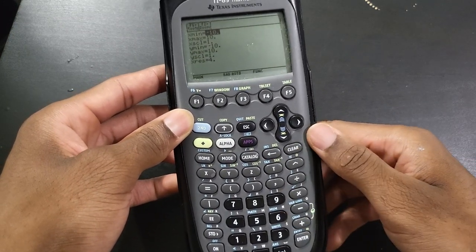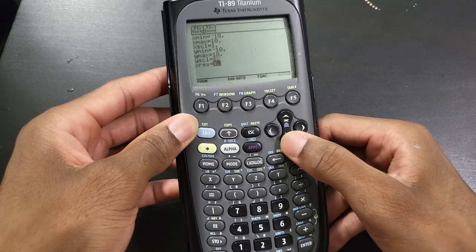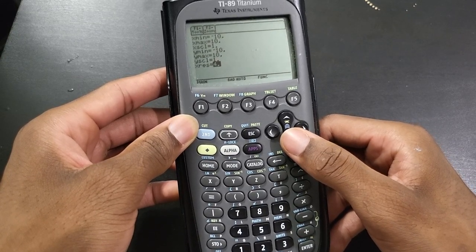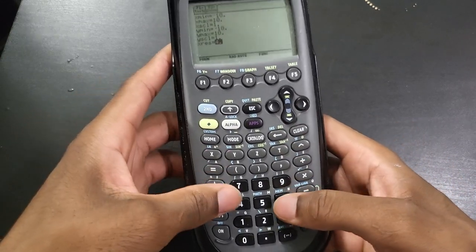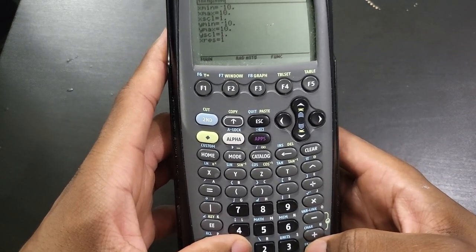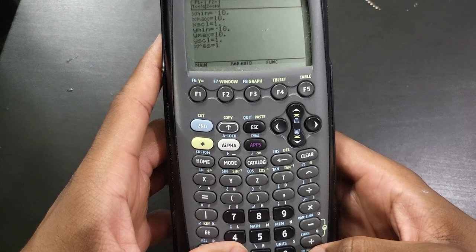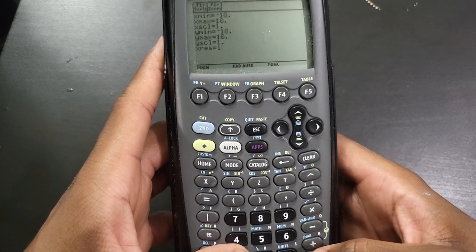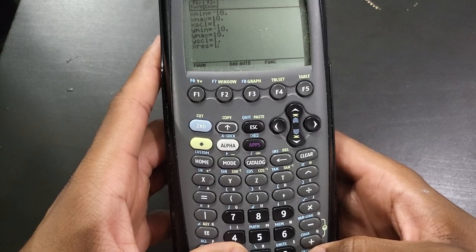So if you have that turned off already, as you can see now you have access to X resolution or X res. By default, I believe the 89 titanium is set to 1. The lower this number is, the nicer your graph is going to look. The higher the number, the more crooked your graph is going to look.